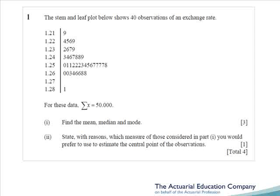The paper kicks off with a stem and leaf plot, where we're asked to calculate the mean, median and mode — three marks just doing stuff from school. The only excitement will be part two, where it asks us which measure we would use to estimate the central point. That all depends on whether we feel that the distribution of the data is symmetrical or skewed.